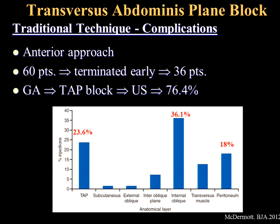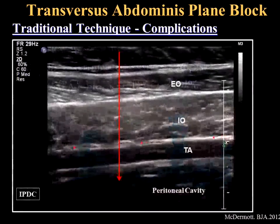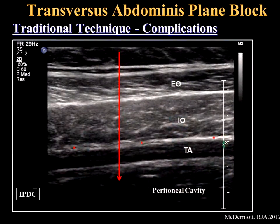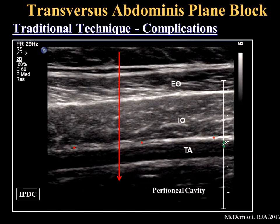In that study, 36% of needles were in the internal oblique, and 18% were actually in the peritoneum — the reason the study was discontinued early. The needle was going deep through external oblique, internal oblique, and transverse abdominus into the peritoneal cavity.